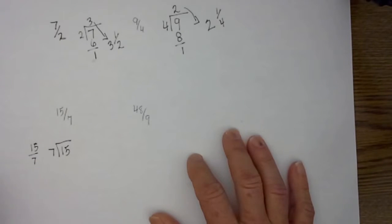What times 7 equals 15? 7 times 2. 2 times 7 is 14. 15 minus 14 is 1.